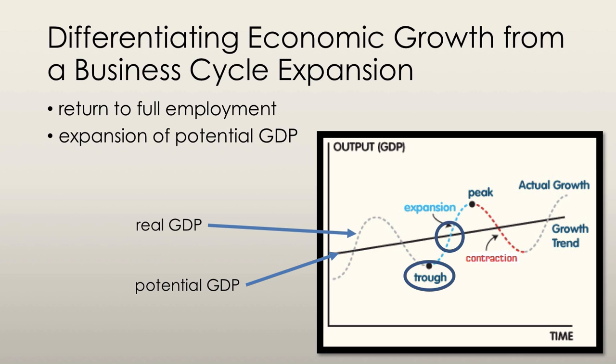Economic growth is an expansion of production possibilities. The growth rate of potential GDP measures the pace of expansion of production possibilities and smooths out business cycle fluctuations. As long as that straight potential GDP line continues to increase, we can say that there is economic growth.